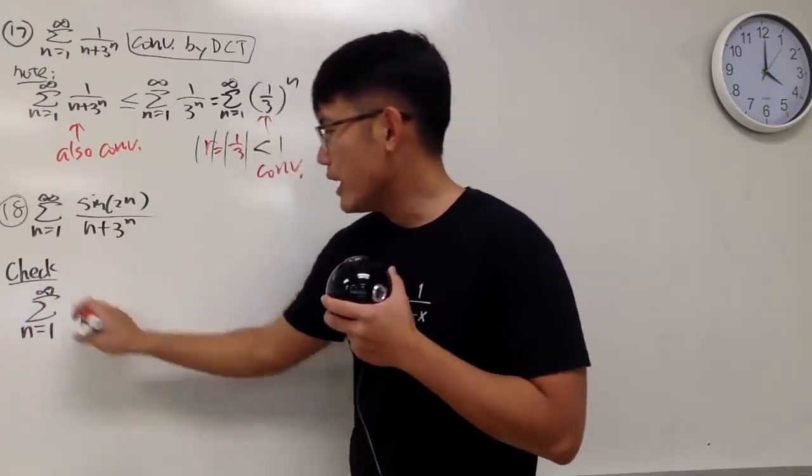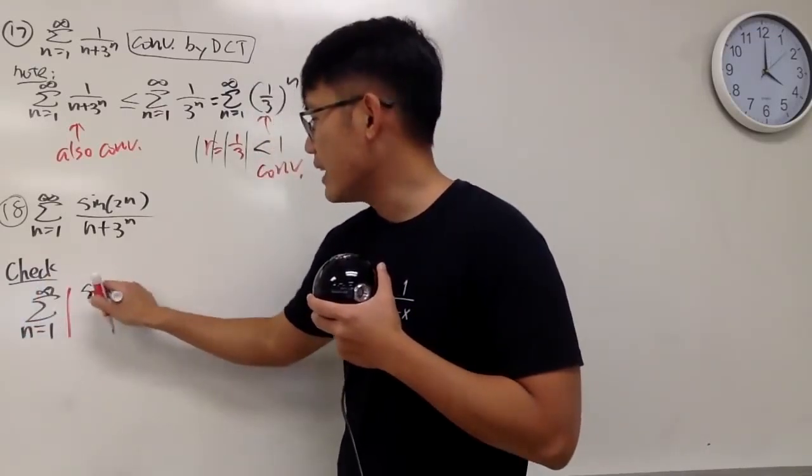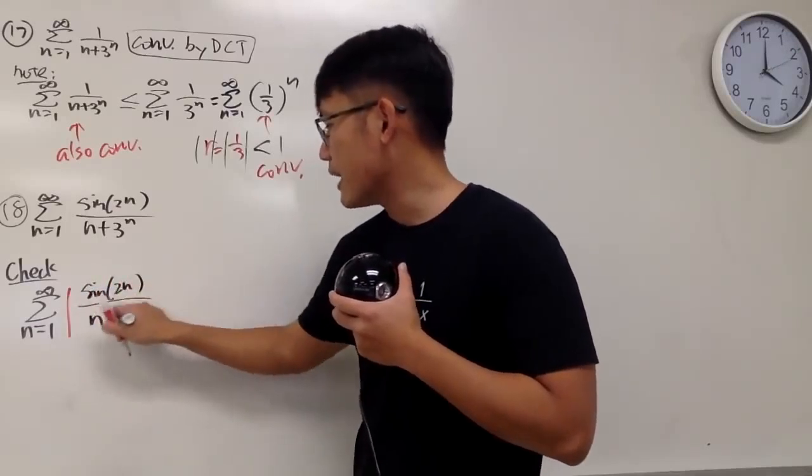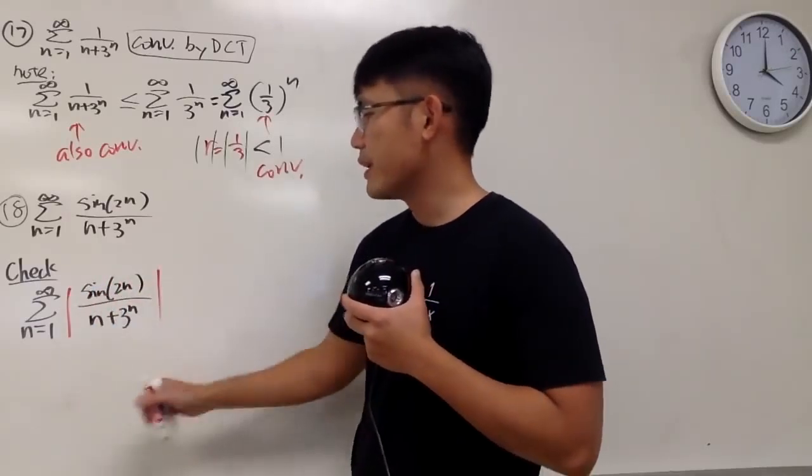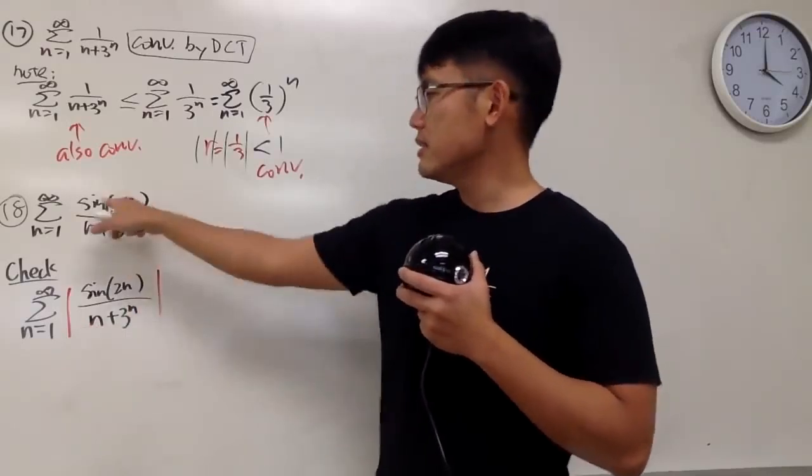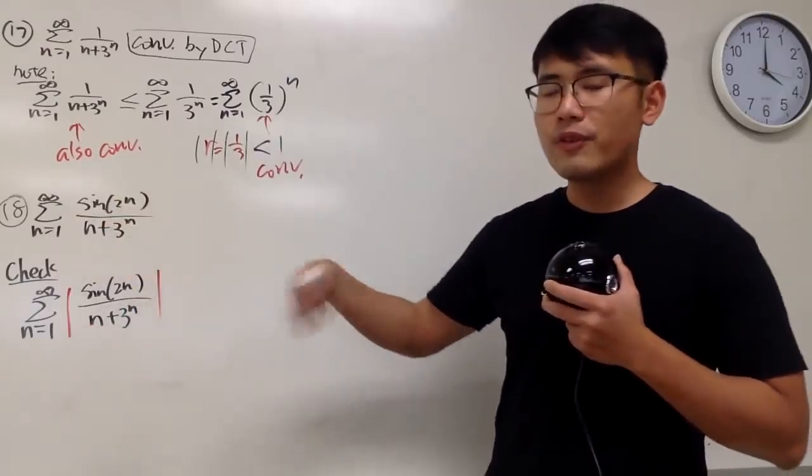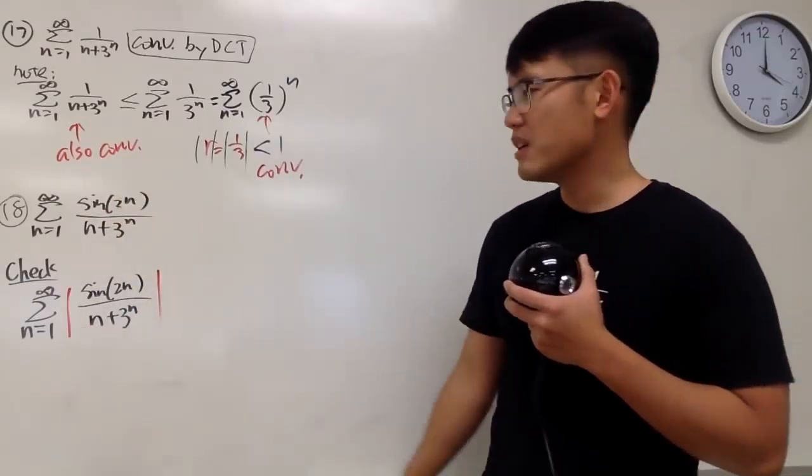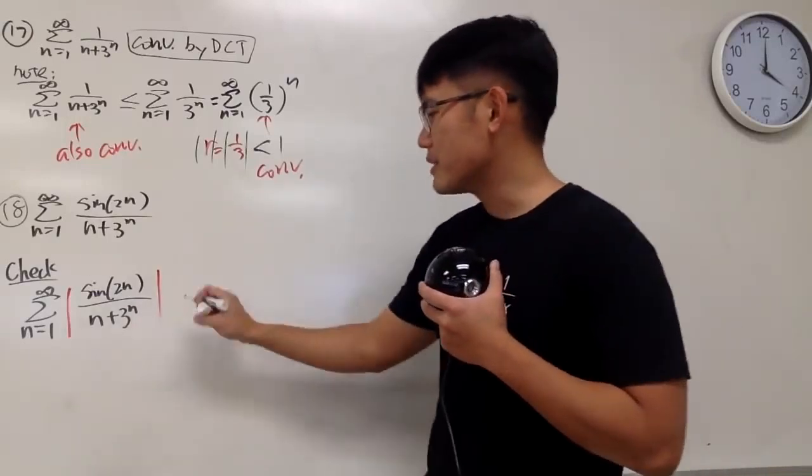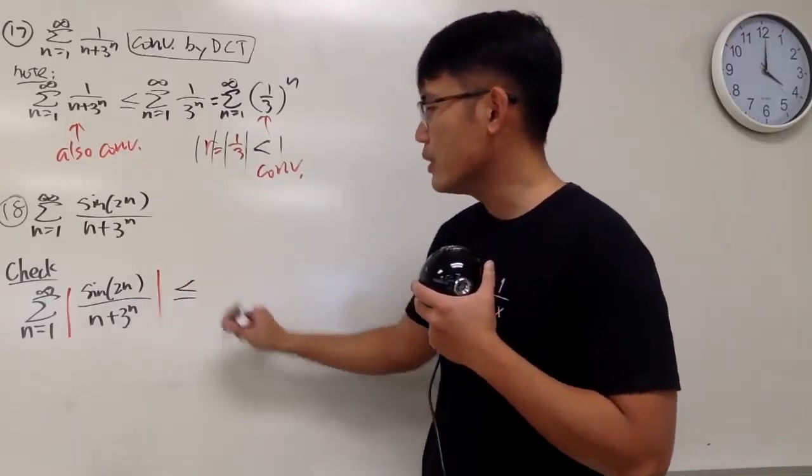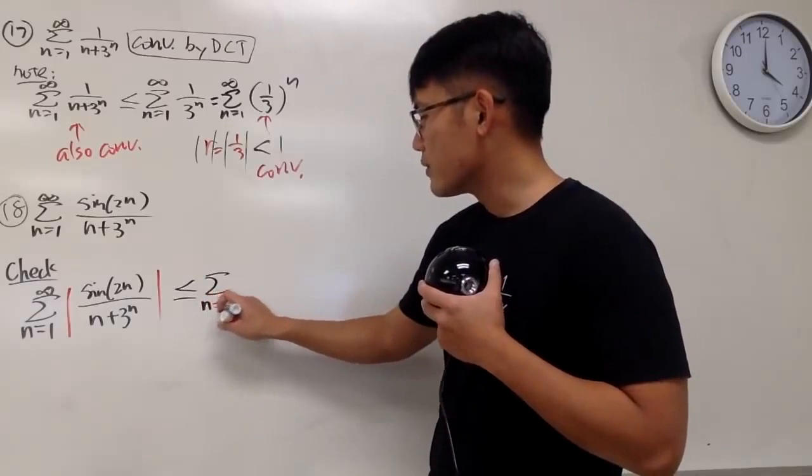we will look at the absolute value of sine of 2n over n plus 3 to the nth power. Even though sometimes the sine of 2n, sine of 2, 4, 5, and so on, that might be negative, absolute value takes care of that business, and we can say this is less than or equal to the sum as n goes from 1 to infinity.